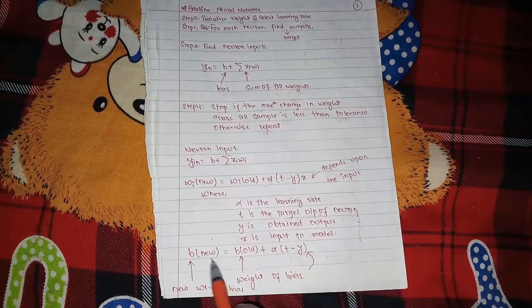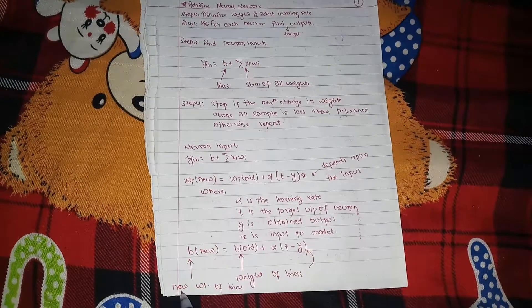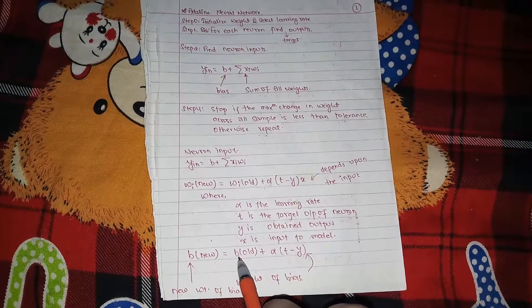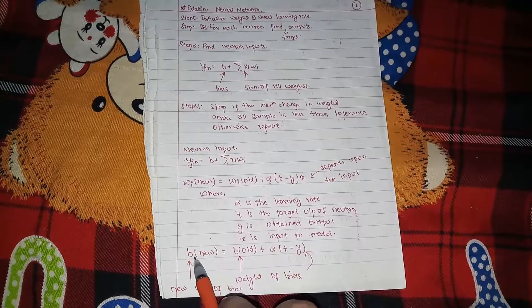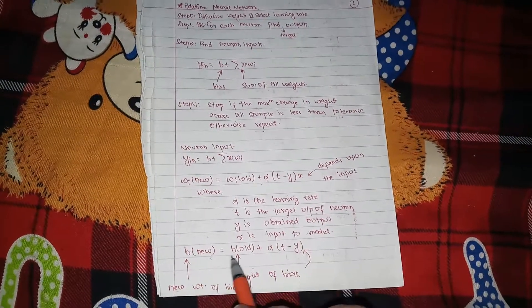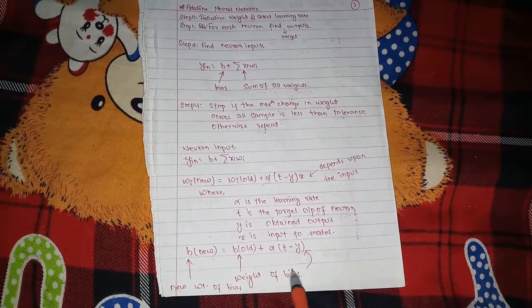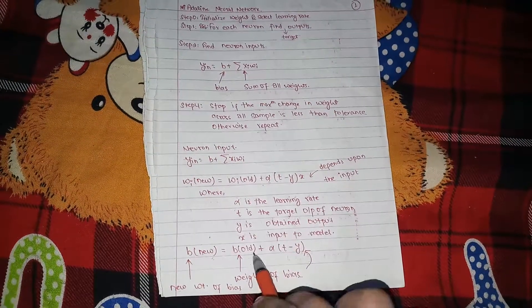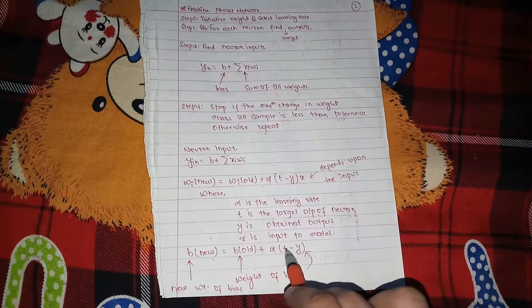So now, what is the B new? B new is the new weight of the bias. Don't be confused with the B new and the bias input. Bias input is always 1. B old, weight of the bias, old weight of the bias, plus alpha times T minus Y.